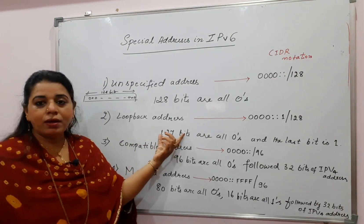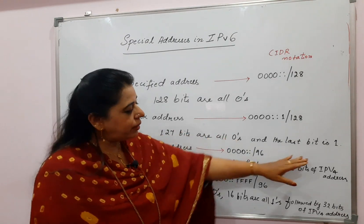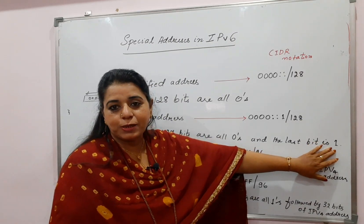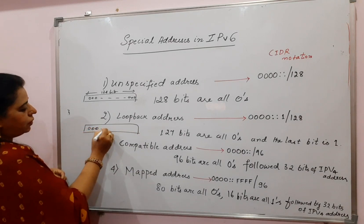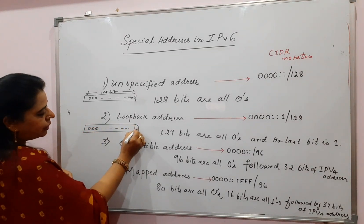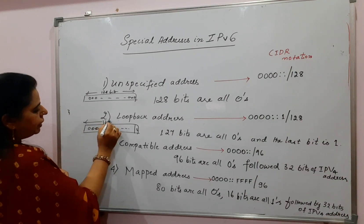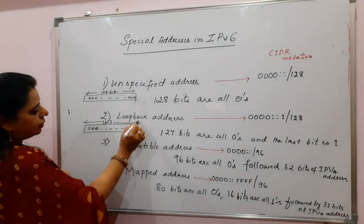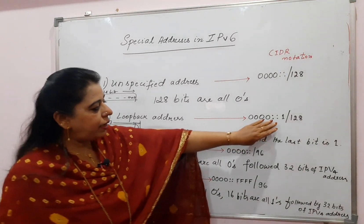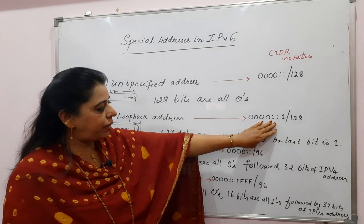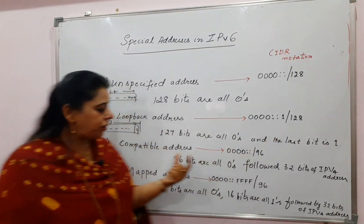The loopback address consists of 128 bits where 127 bits are all zeros and the last bit is 1. So you write 0000 for 127 bits, and the last bit is 1. This is the loopback address. The CIDR notation is written in this manner, indicating that value clearly.